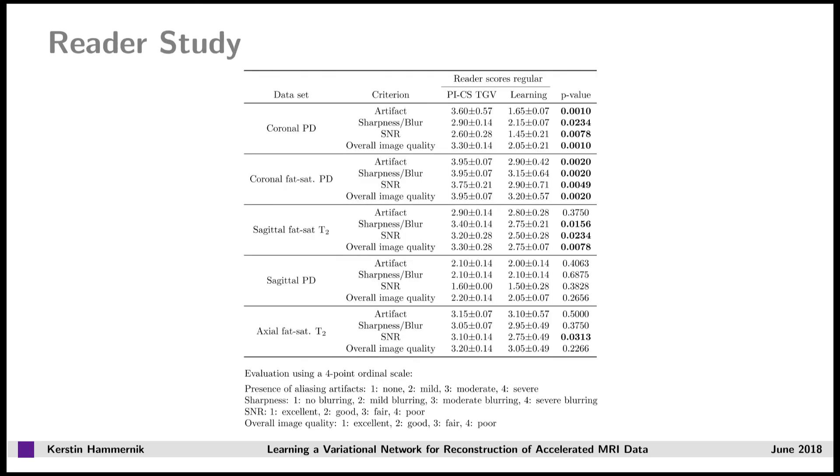In addition, we performed a reader study on image quality between variational network and total generalized variation reconstructions. The data were evaluated by two radiologists for sharpness, SNR, amount of undersampling artifacts and overall image quality. We made a statistical evaluation using a one-sided Wilcoxon signed rank test on the quality scores averaged over the two readers, proving for the null hypothesis that total generalized variation reconstructions are equal or better than variational network reconstructions for a given significance level alpha. This table indicates that the image quality is significantly better for both coronal scans and sagittal T2-weighted scans, while the difference in image quality for the axial scans and sagittal proton density weighted scans is not significant.